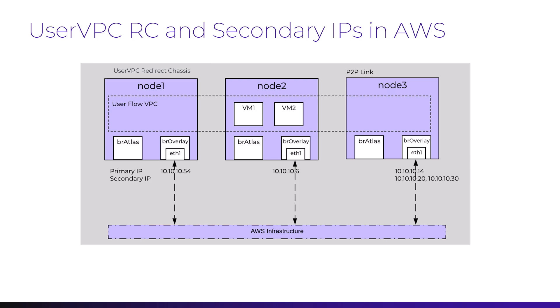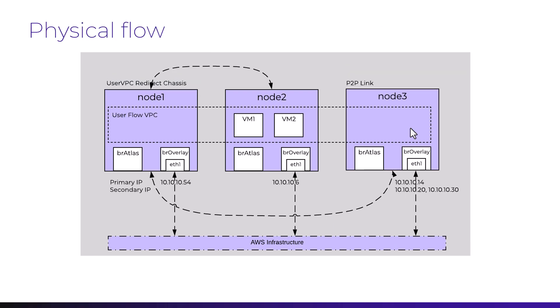We see here that on our BR overlay we are consuming IPs from the Flow Virtual Networking subnet. Where we had our source NAT IPs, we can tell that the peer-to-peer link is all hosted on node 3. For user flow VPC communication flow: we have two VMs — VM1 and VM2 — on node 2. The traffic will go to the user VPC redirect chassis hosted on node 1. From there, the traffic will be redirected out through the transit VPC on node 3, where the peer-to-peer link is hosted.